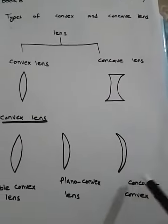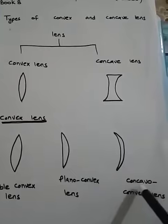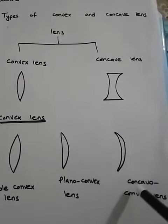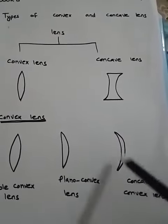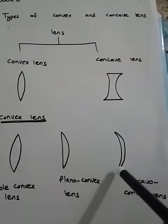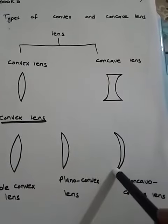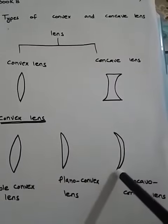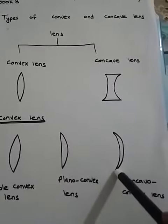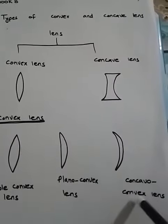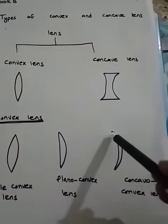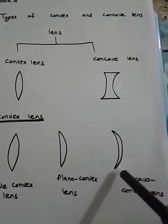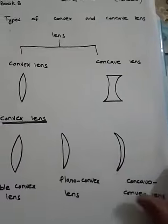The third type of the convex lens is concavo convex lens. 'Concavo' means one side is curved inwards, and 'convex' means one side is curved outwards. So, a concavo convex lens is one where one side is curved inwards and the other side is curved outwards.